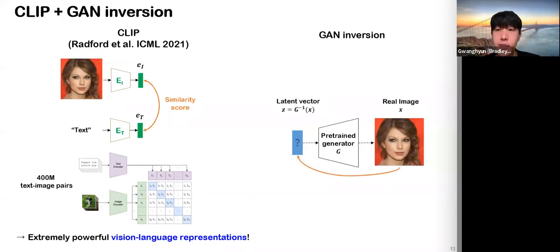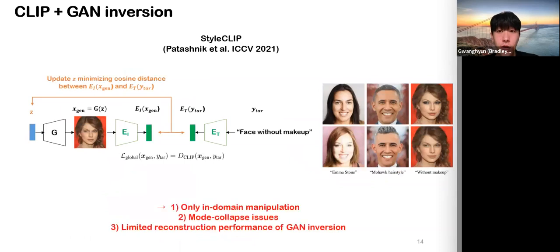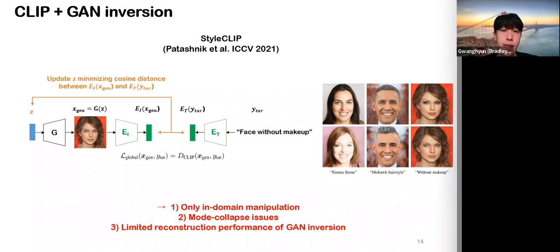Recently, to overcome these issues, CLIP and GAN inversion methods are combined. In CLIP, text and image encoders are trained to identify which texts match which images in the dataset. GAN inversion is the method for finding a latent vector corresponding to an input image given a pre-trained GAN generator. Combining this, StyleCLIP performs image manipulation by updating the inverted latent vector, minimizing cosine distance between CLIP embeddings of the generated output and target text. It shows remarkable results but its manipulation is limited to only in-domain manipulation and has mode collapse issues.